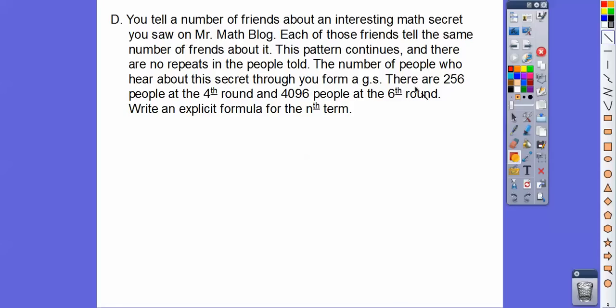So this all just says we've got a geometric sequence right here. So here we go. There are 256 people on the fourth round. So this is a sub 4 equals 256. And there's 4,096 people at the sixth round. So this is a sub 6 equals 4,096. So we're going to write a rule for this.